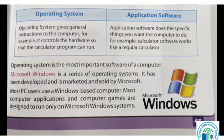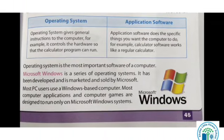Operating system kya hai? Sare general instruction dheti hai computer ko and it controls the hardware. Application software does specific things you want the computer to do. Application software bahut saare kaam ek saat mein kerta hai jo humme computer se chahiye. For example, calculator software works like a regular calculator — computer ka jo calculator software hai woh humara daily use wala regular calculator jaisa hi kaam kerta hai. Operating system is the most important software of the computer.